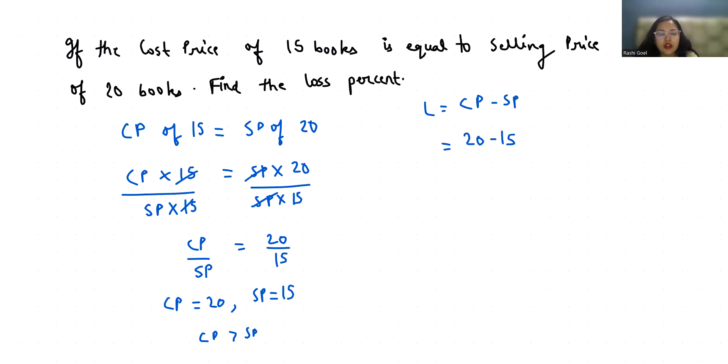To calculate loss percent, the formula is loss over CP times 100. Loss is 5 and CP is 20 times 100. We can cancel this to get 1 by 4, so 1 by 4 times 100, which simplifies to 25.